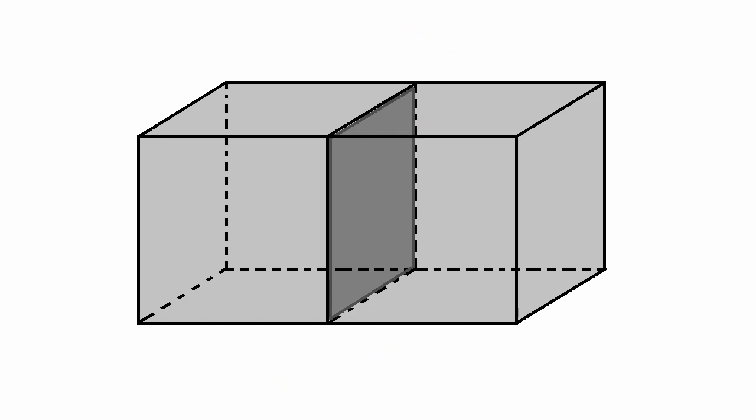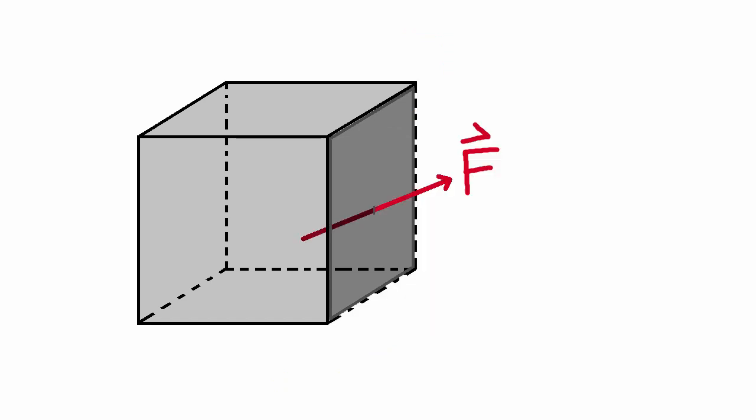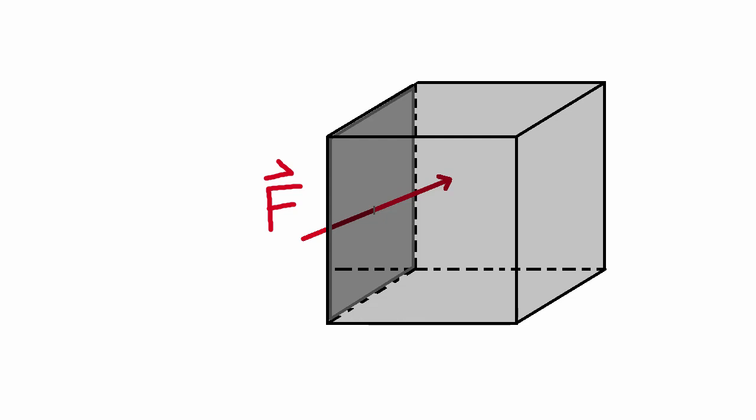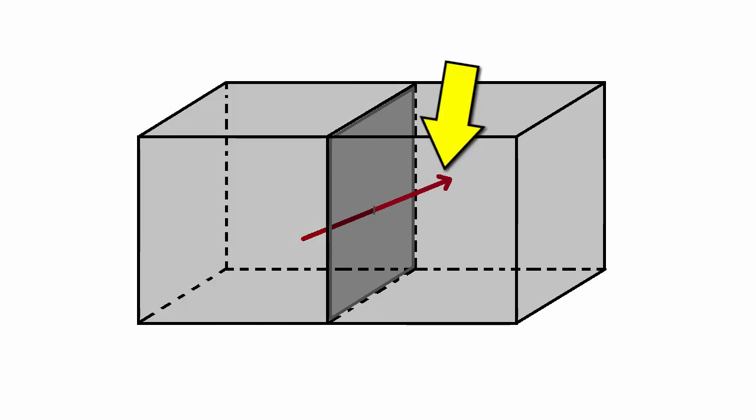Let's consider the flux through this volume and particularly through this surface here. If the field line goes this way, then we know that the flux will be a positive value for this volume because the field is sort of going outwards away from this volume. But instead, if we consider the flux for the other volume but through the same surface, then this time the flux will be a negative value because the same field line is seeming to go into our volume here.